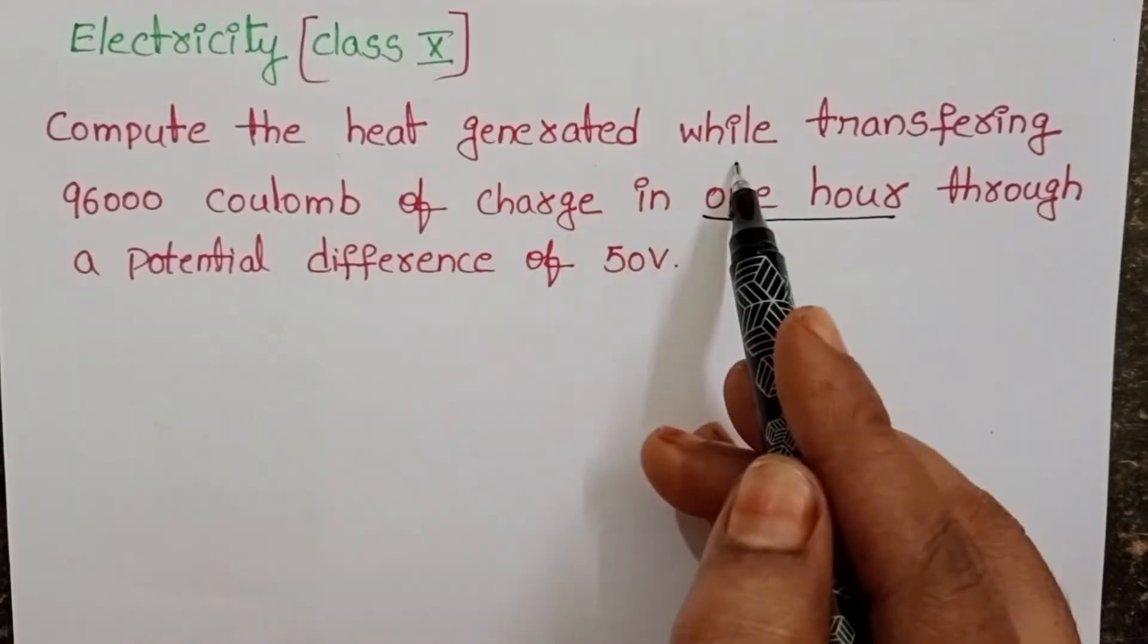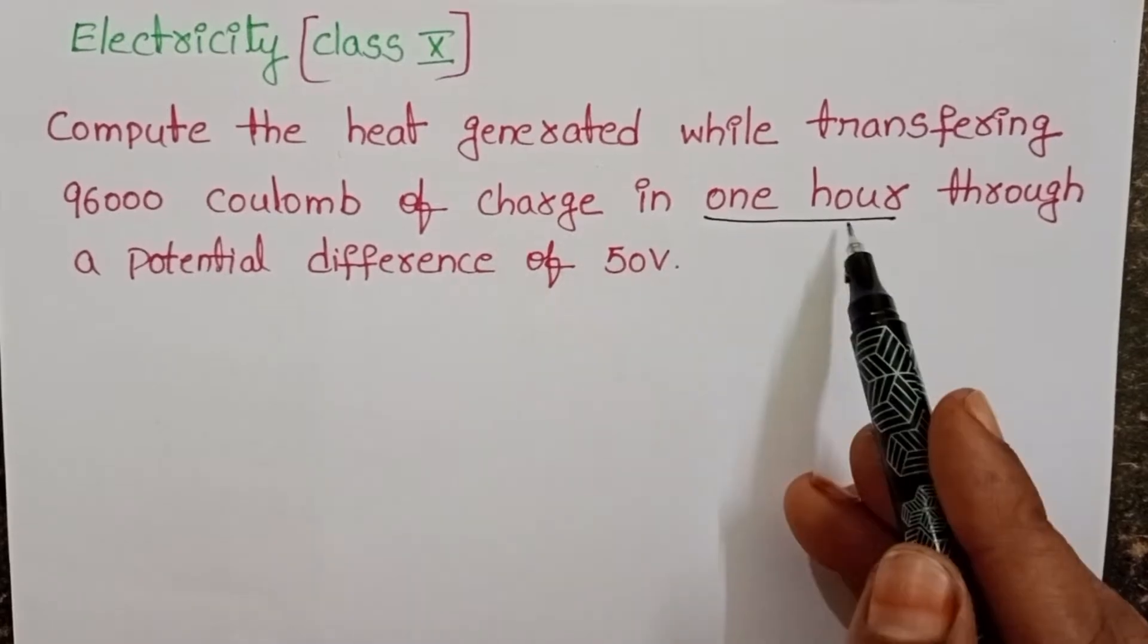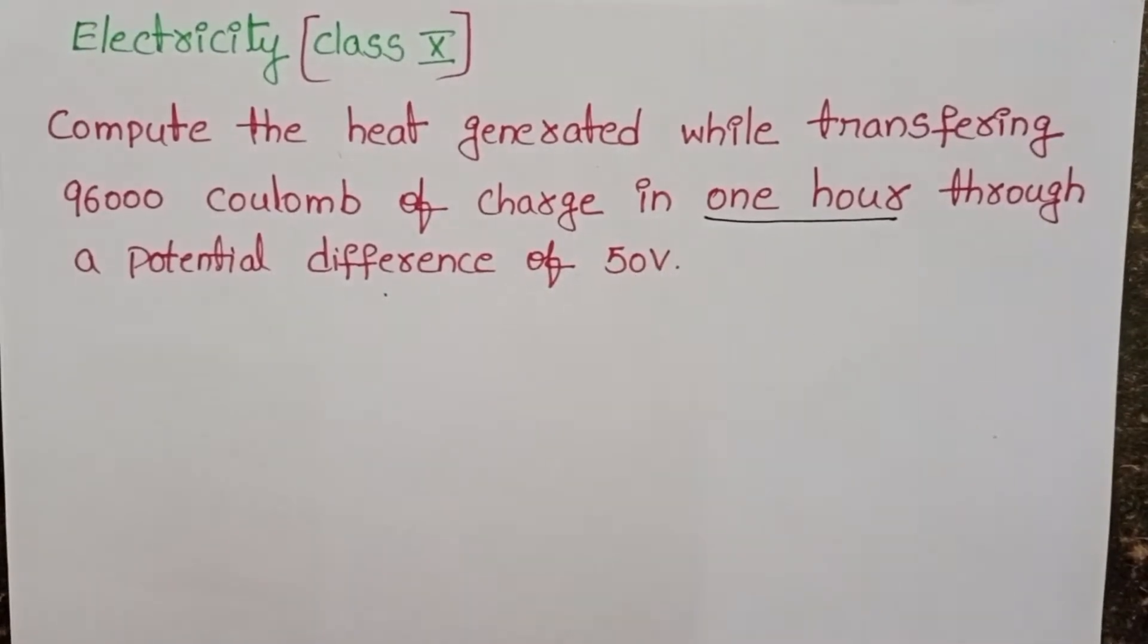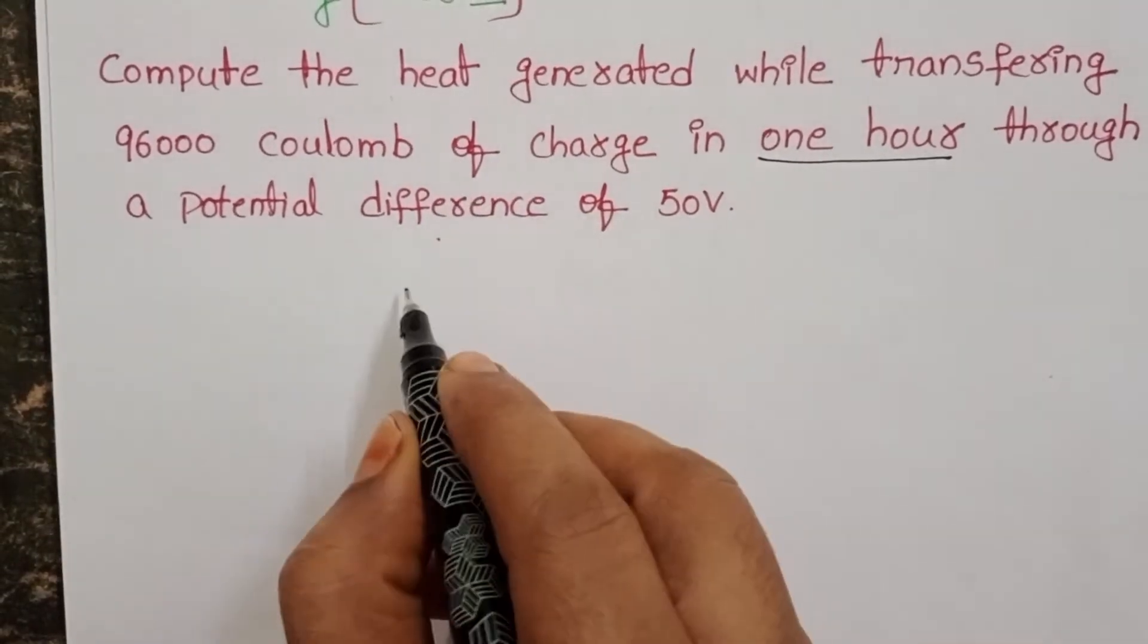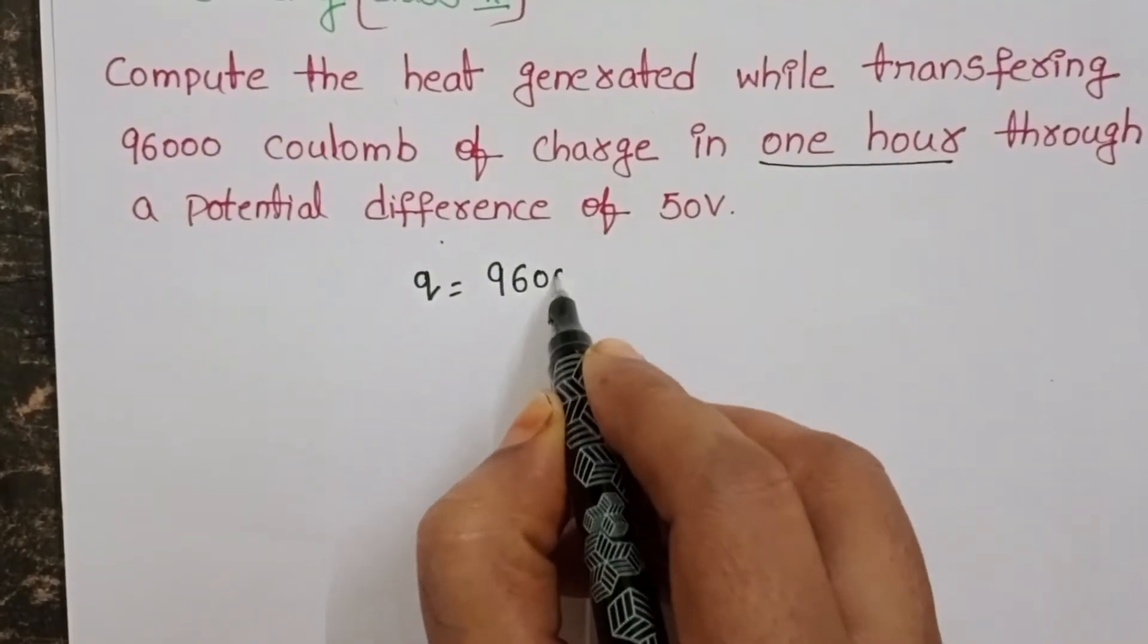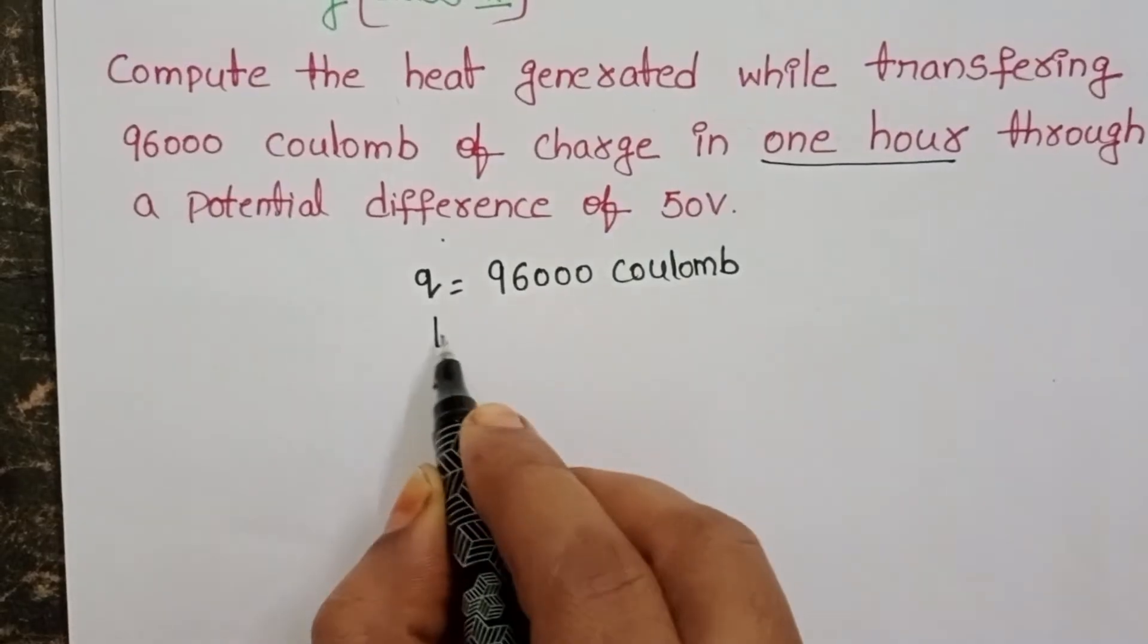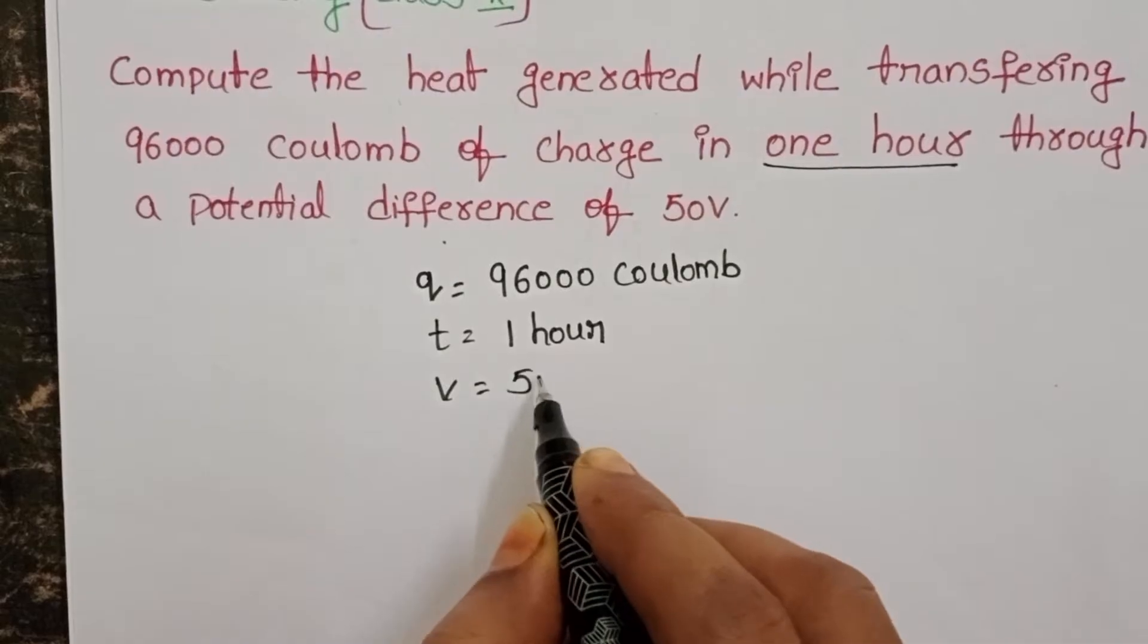Compute the heat generated while transferring 96000 coulombs of charge in one hour through a potential difference of 50 volts. In this question, we know the charge q equals 96000 coulombs, time t equals 1 hour, and potential difference V equals 50 volts.